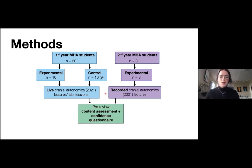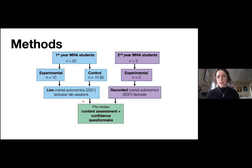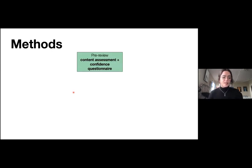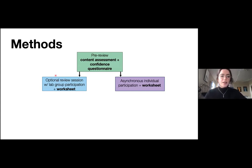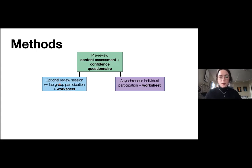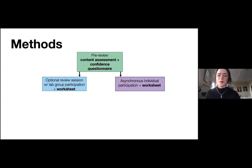Both first-year and second-year students completed completely anonymized online pre-review content assessments and confidence questionnaires — before students interacted with the models or traditional lecture resources. Once they filled out these online assessments, first-year students were invited to attend an optional in-person lab review session based on their gross anatomy lab groups. They used their respective resources — either the 3D model or traditional lecture materials — to complete a parasympathetic group worksheet. Second-year students were given the worksheet as well and were invited to participate asynchronously and individually.